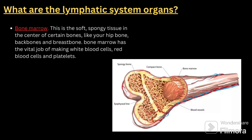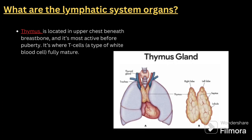The first organ is bone marrow. Bone marrow is a soft, spongy tissue in the center of certain bones like your hip bone, backbone, and breastbone. Bone marrow has the vital job of making white blood cells, red blood cells, and platelets. After explaining the functions and definition of the lymphatic system, you continue with the organs, starting with bone marrow.